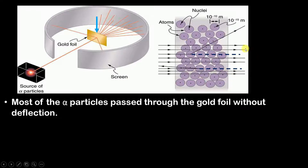When alpha particles are passed through this gold foil, most of the alpha particles passed without deflection — that is, they pass straight. Can you see these alpha particles which are passing straight? Many of them are passing straight without deflection.